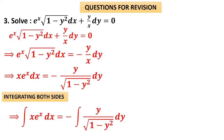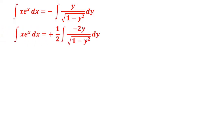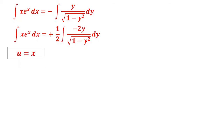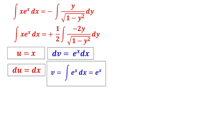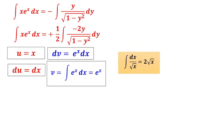Integrating both sides: integral of x·e^x dx = −integral of y/√(1−y²) dy. On the right-hand side, keeping −y inside and multiplying and dividing by 2, the numerator will contain the differentiation of the term inside the square root. On the left-hand side, we evaluate using integration by parts — it is polynomial times exponential. Let u = x (polynomial) and dv = e^x dx (exponential), so du = dx and v = e^x.